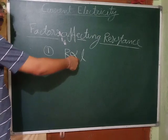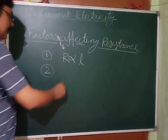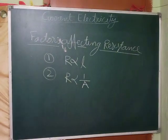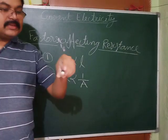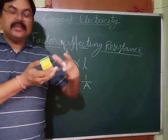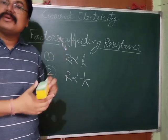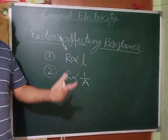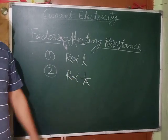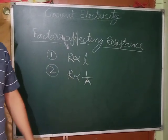A thicker wire has more area of cross section and therefore less resistance; a thinner wire has less area and therefore more resistance. Third, resistance depends on the nature of the material — represented by resistivity rho.